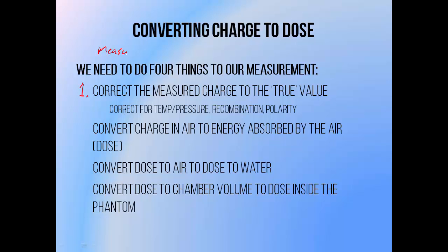This involves accounting for the effects of ambient temperature and pressure, which can affect the amount of air inside the chamber and therefore the amount of energy that it will absorb. Also correcting for recombination, basically accounting for the fact that not all charge generated inside the chamber will be measured. Some of the positive and negative particles will combine and not reach the electrodes to be measured.